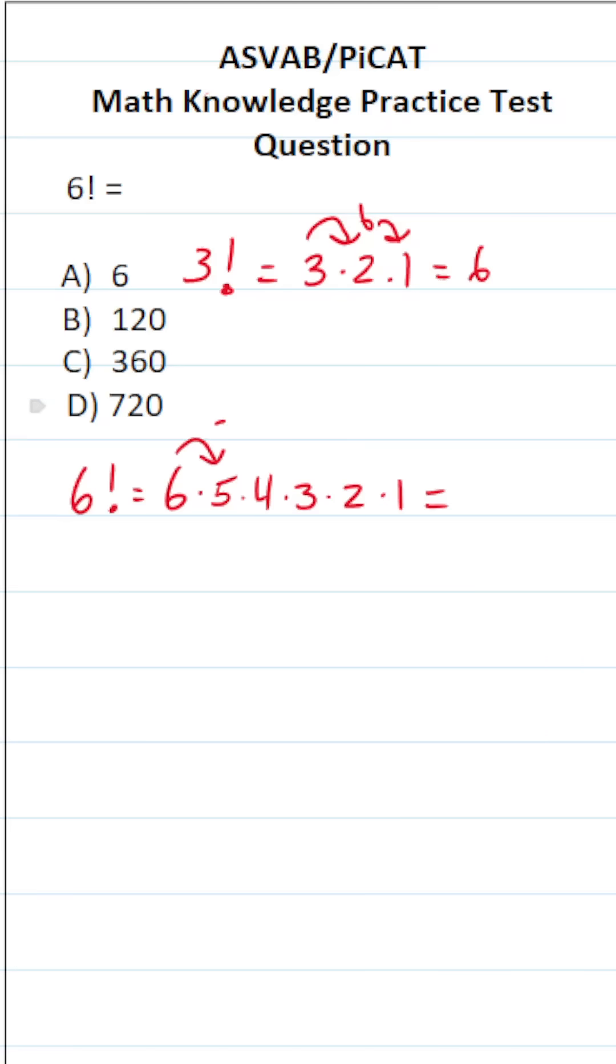6 times 5 is going to be 30. 30 times 4 is 120. What is 120 times 3? Well, if you can't do that mentally, do it off to the side. 0 times 3 is 0. 2 times 3 is 6. 1 times 3 is 3. So that's going to be 360.